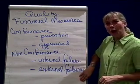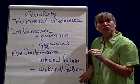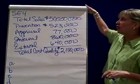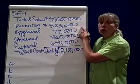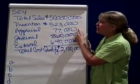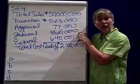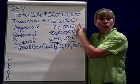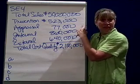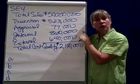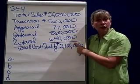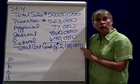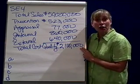Let's take a look at a problem and figure out how we can compute financial measures of quality for conformance and non-conformance — Short Exercise 4. Total sales are $50 million. Prevention costs come to $523,000. We've looked at all the costs of the company and sorted them by whether they prevent quality mistakes, are appraisal costs, or are internal or external failure costs. This company is spending a total of $2.1 million on quality efforts.